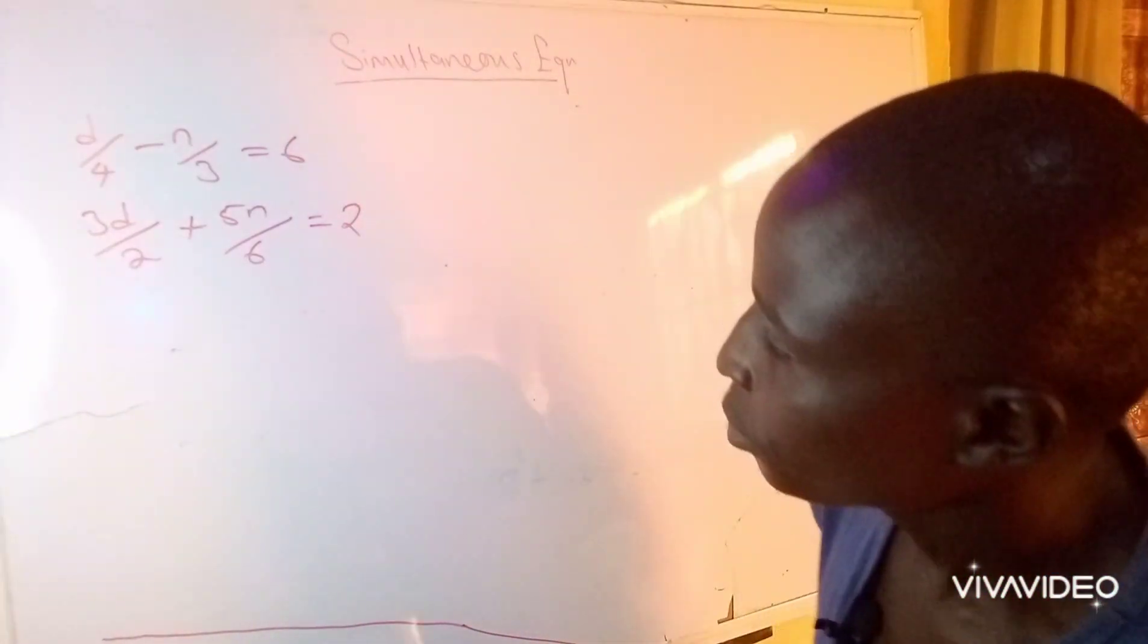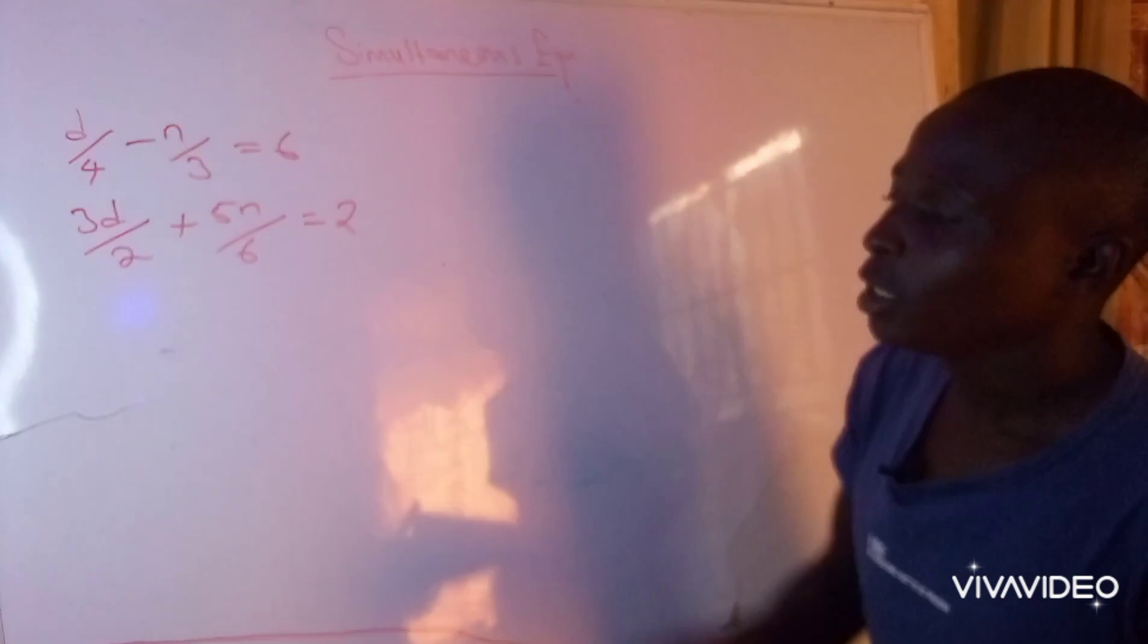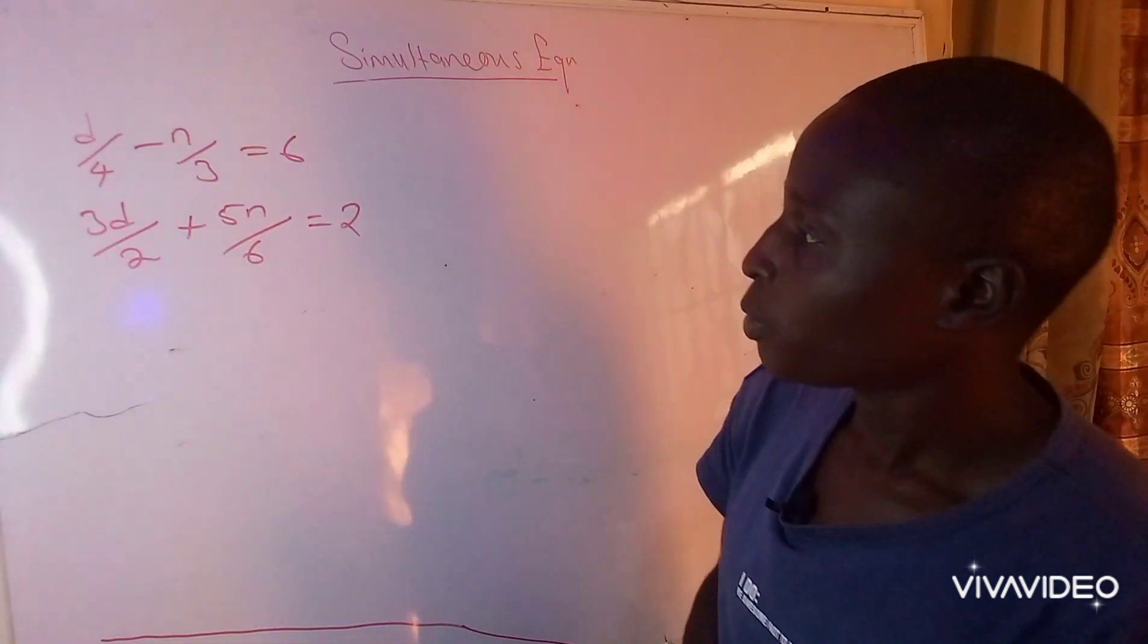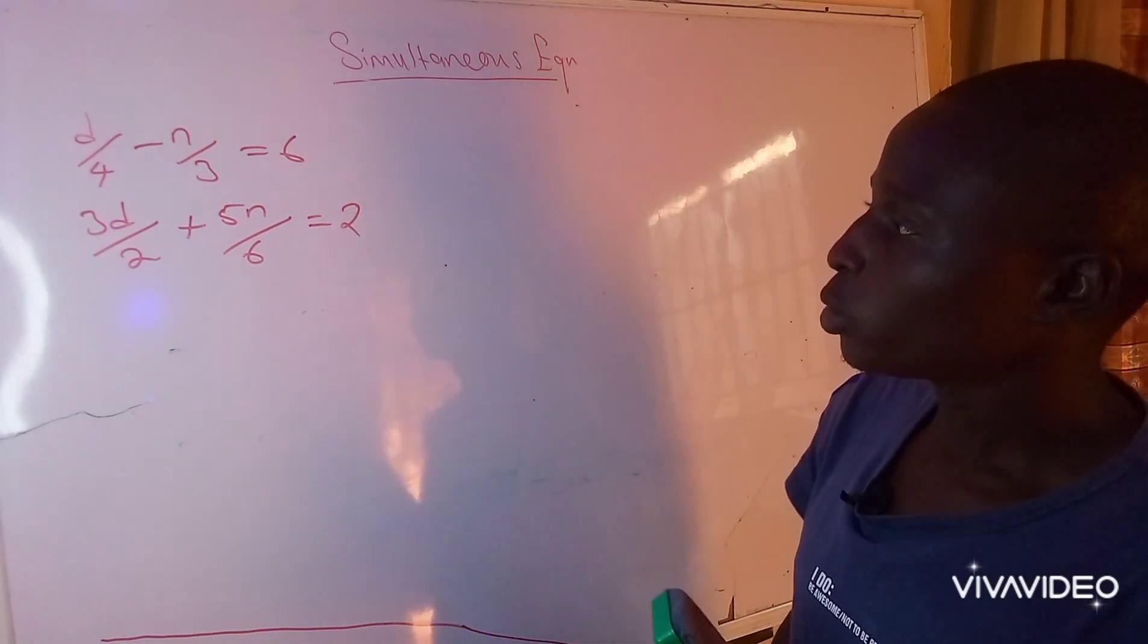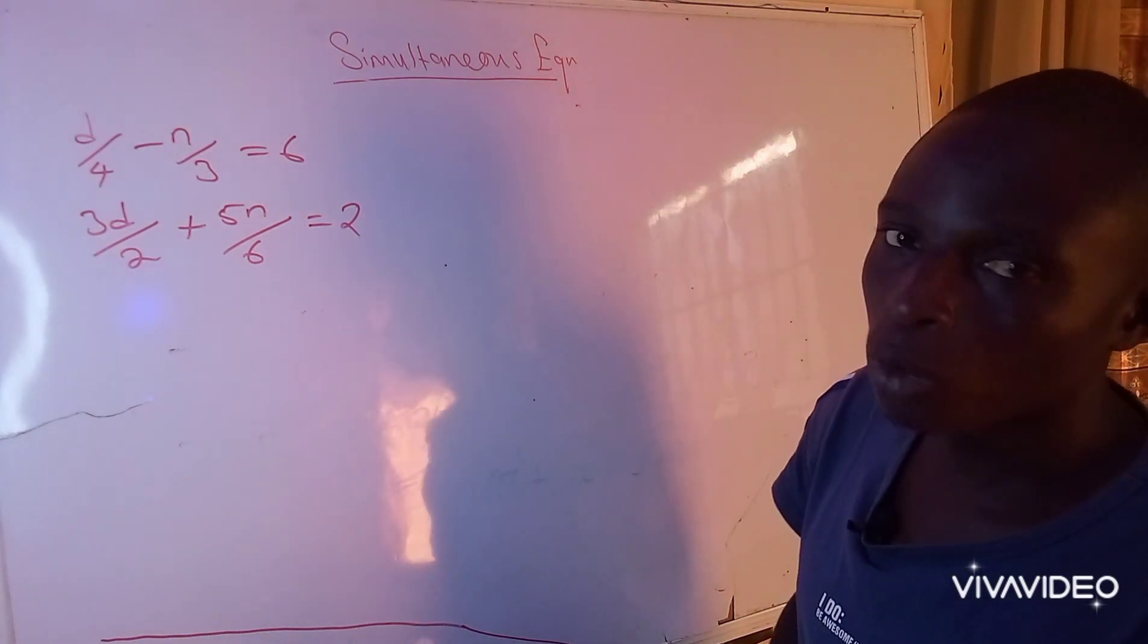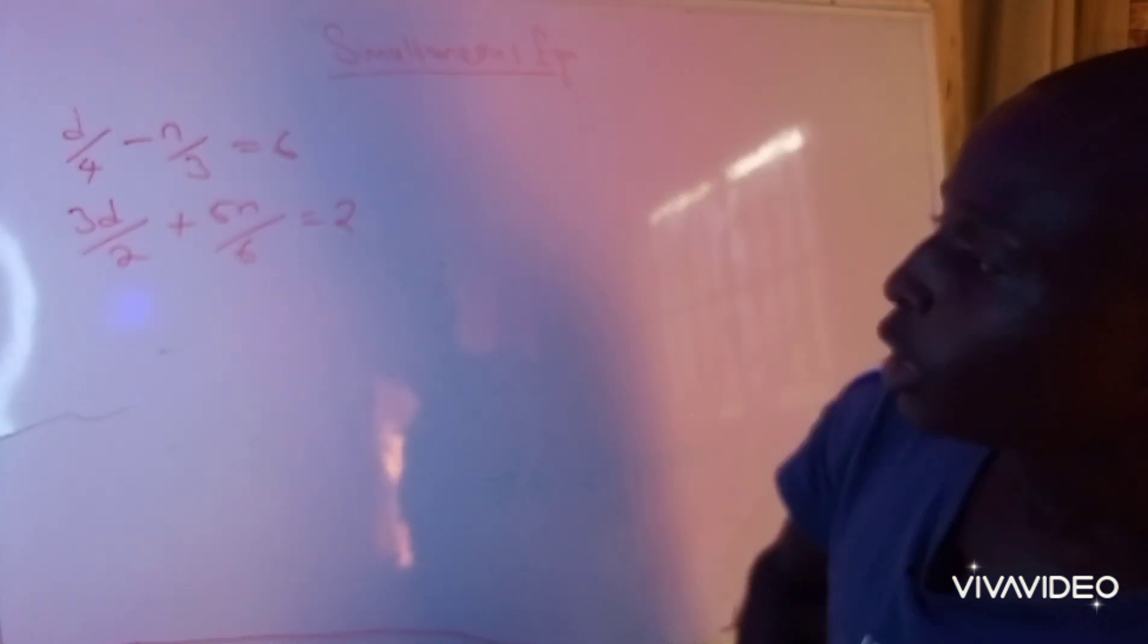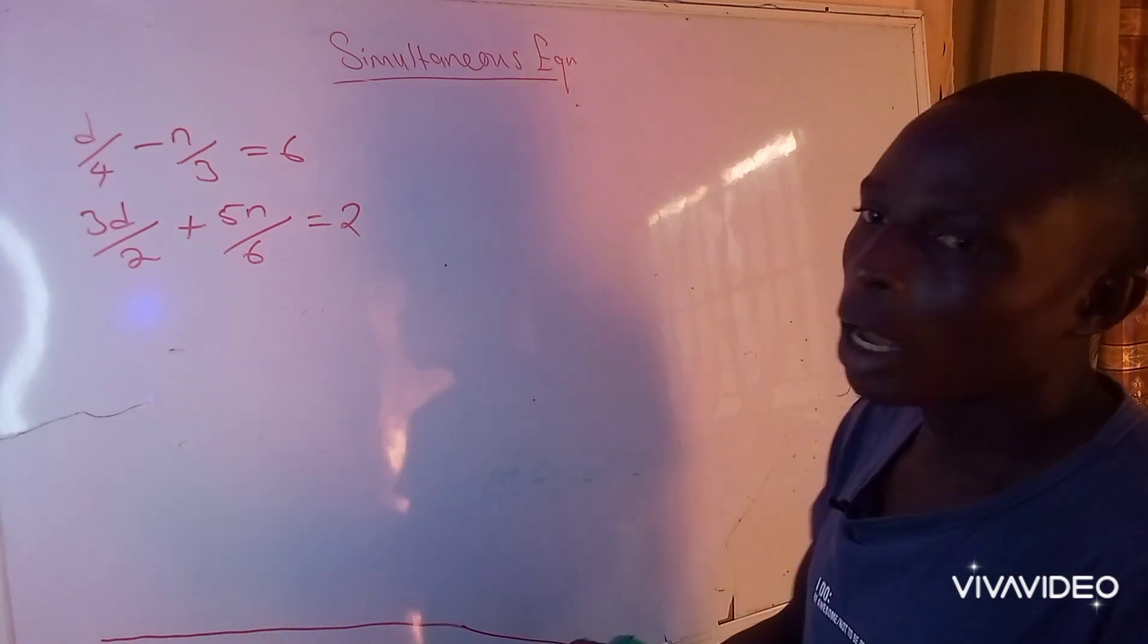We can see that the two equations on the board are in fractional form. So what are we going to do to make the two equations in a way that will be more suitable for solving simultaneous equations? In this case, the best thing to do is to pick the first equation and simplify it, then pick the second equation and also simplify it.